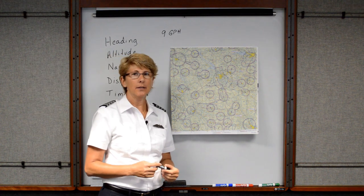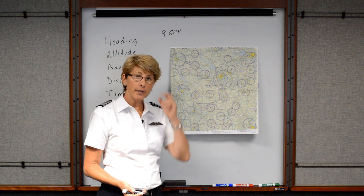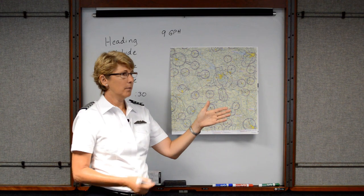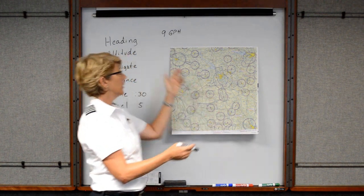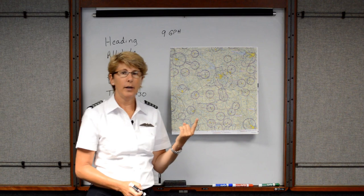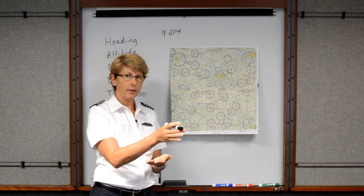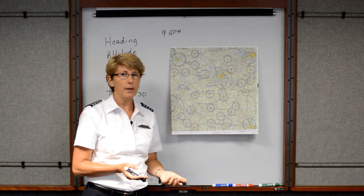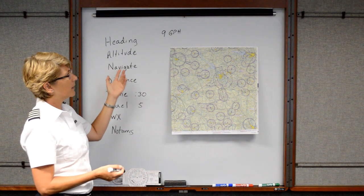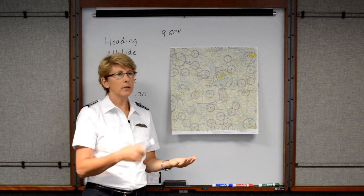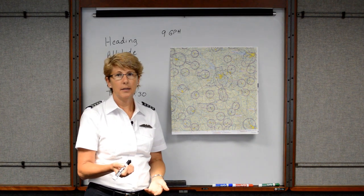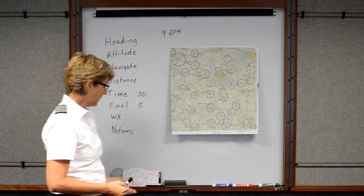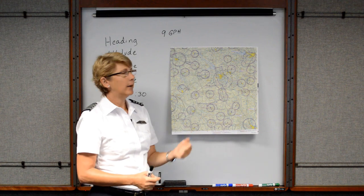On your checkride, one of the tasks you have to prove to your examiner is that you understand how to divert. You'll start on your cross-country flight plan, and the examiner will have you divert at some point. You'll go through this step process: first, pick a logical heading and turn the airplane right away. Next, consider your altitude — should you climb or descend for your direction of flight? Then navigate using your equipment: GPS, VORs, or ask ATC for vectors. Next, measure the distance using your plotter or GPS.